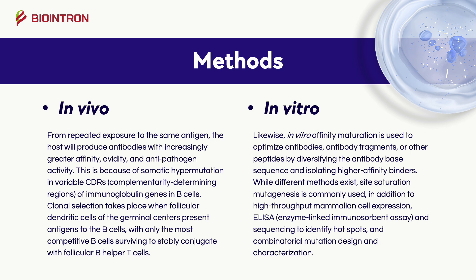This is because of somatic hypermutation in variable CDRs — complementarity determining regions — of immunoglobulin genes in B cells. Clonal selection takes place when follicular dendritic cells of the germinal centers present antigens to the B cells, with only the most competitive B cells surviving to stably conjugate with follicular B helper T cells.